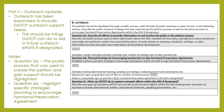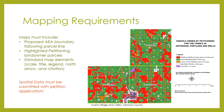The AEA boundary must be mapped and spatial data must be submitted with the petition application. When creating the boundary, it must follow parcel lines, contain all petitioning landowners' land, be a contiguous block of land, and only contain parcels planned for farmland preservation in the county's certified farmland preservation plan. If you need a copy of your county's farmland preservation plan, please contact your local land conservation department, your county zoning department, or the DADCAP working lands team.